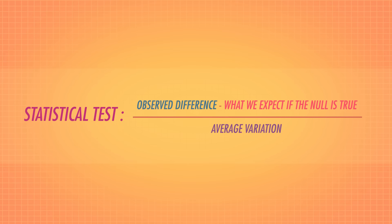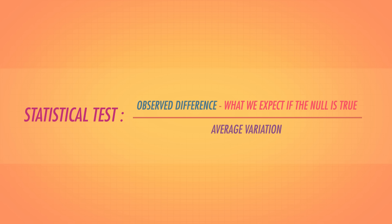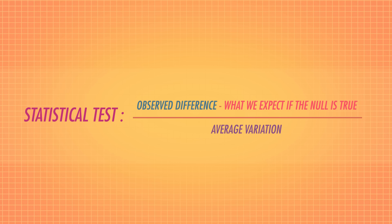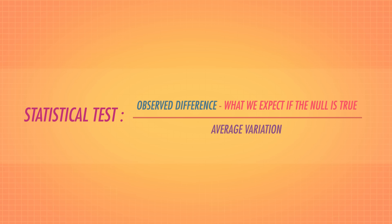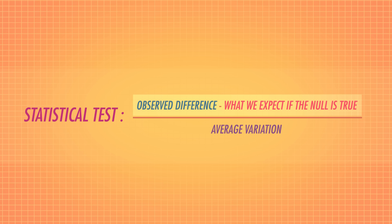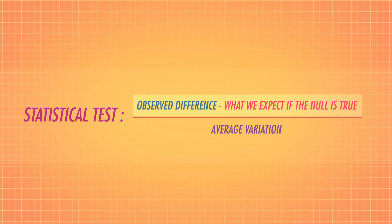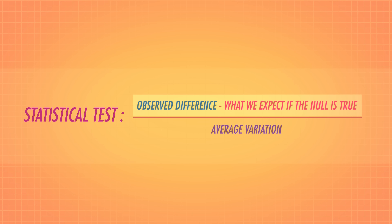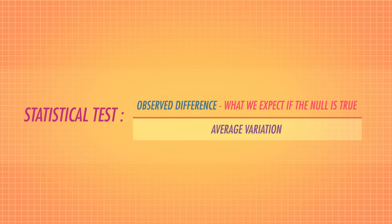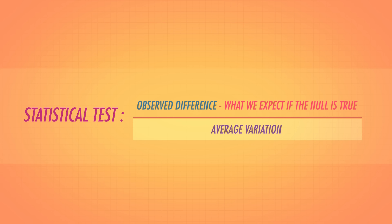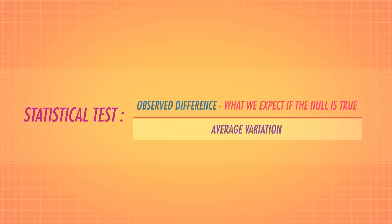Statistical tests usually take a standard form, and the test we'll use here — chi-square — is only slightly different from the others we've used so far. The idea in the numerator, looking at the difference between what we observed and what we'd expect if the null is true, is exactly the same. The denominator, average variation, is a little different — let's figure out why with an example.